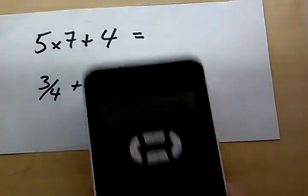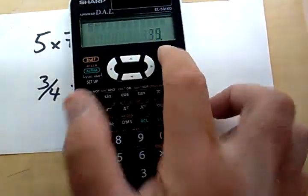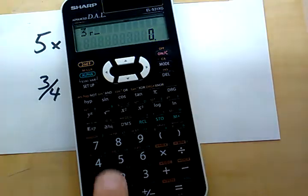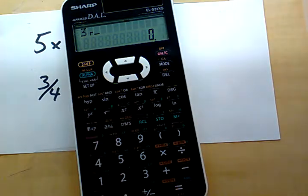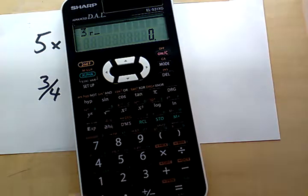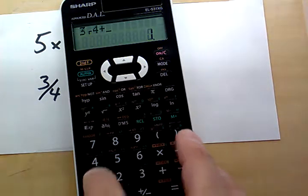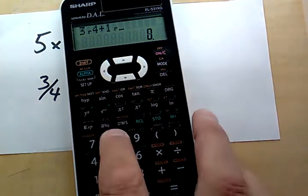Let's do 3 quarters plus 1 eighth. So I'll clear that out. 3 fraction. See, that's your fraction button. ABC. You want an ABC button if your fractions really suck. So 3 fraction, 4 plus 1, ABC, 8.